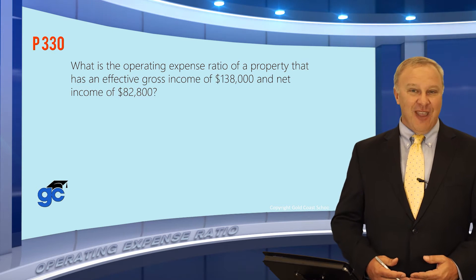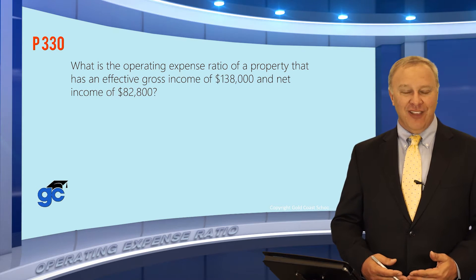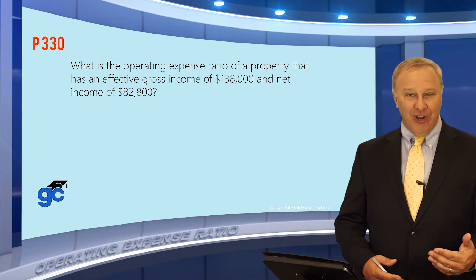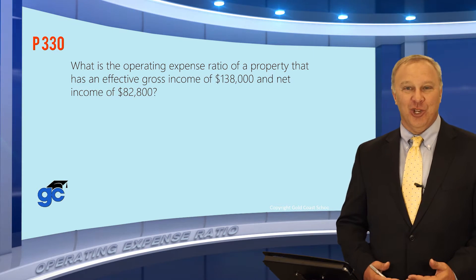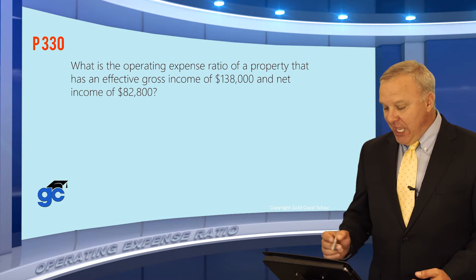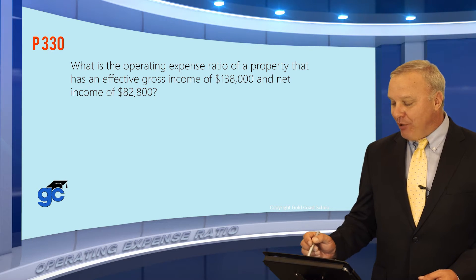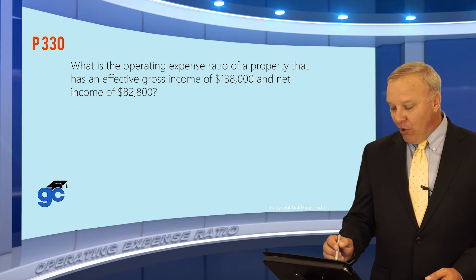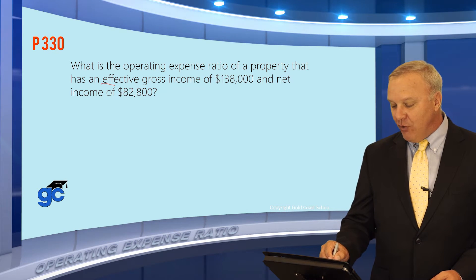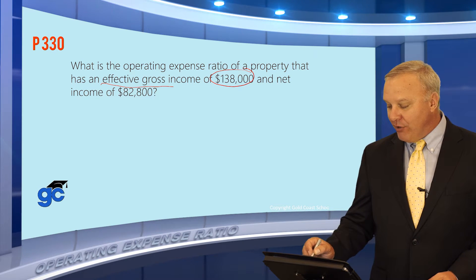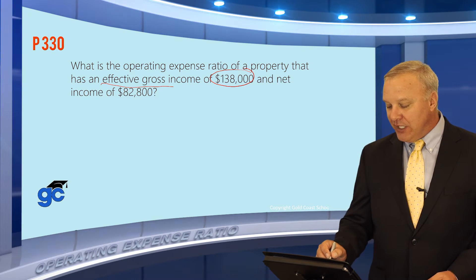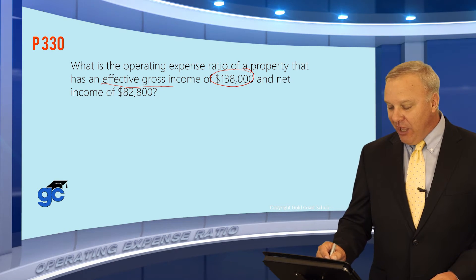This video is just a quick example of how to calculate an operating expense ratio. Let's take a look at the question. What is the operating expense ratio of a property that has an EGI, or effective gross income, of $138,000 and a net income of $82,800?